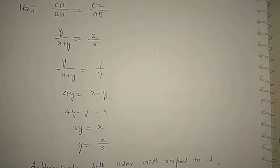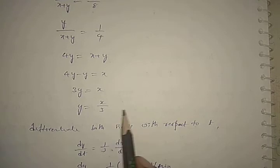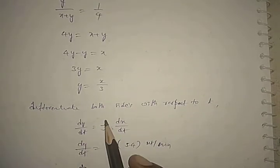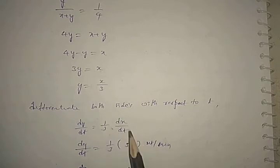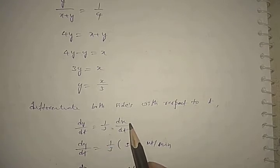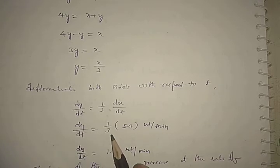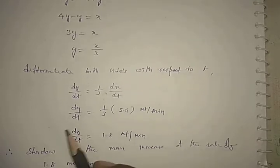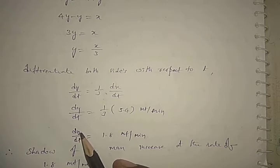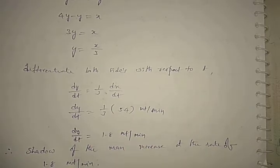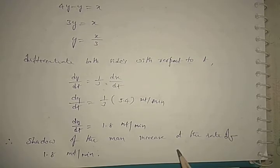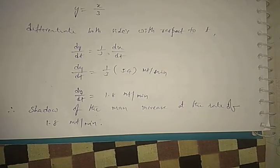Therefore Y = X/3. Now differentiating with respect to t: dy/dt = 1/3 · dx/dt. Since dx/dt is 5.4 meters per minute, dy/dt = 5.4/3 = 1.8 meters per minute. Therefore the shadow of the man increases at the rate of 1.8 meters per minute.